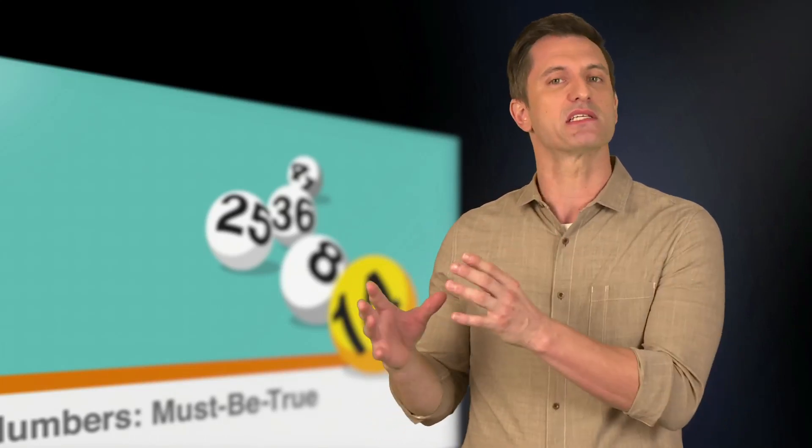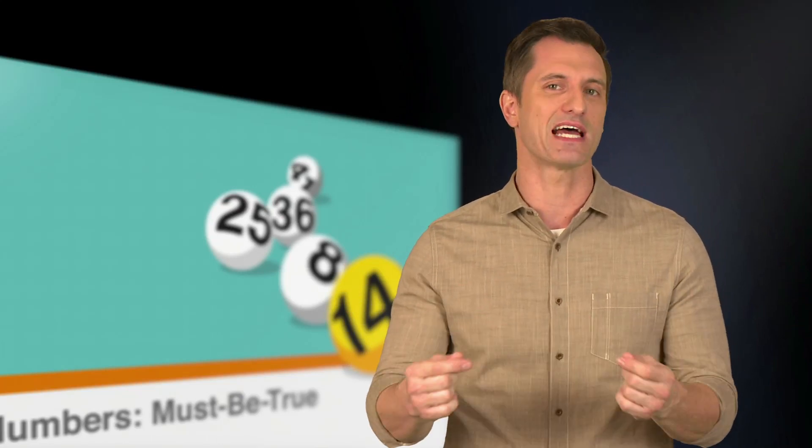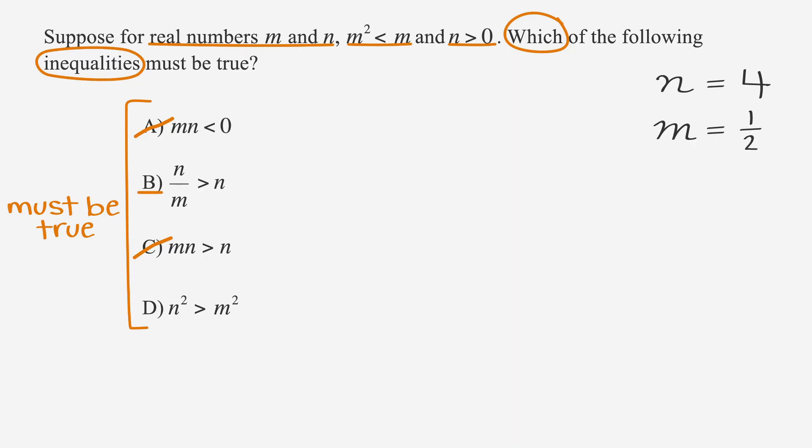Since we have picked a positive integer bigger than m for n, let's try picking a fraction less than m for this round. So let's pick one third for n. Plugging into answer choice B, we get one third divided by one half, which is greater than one third.